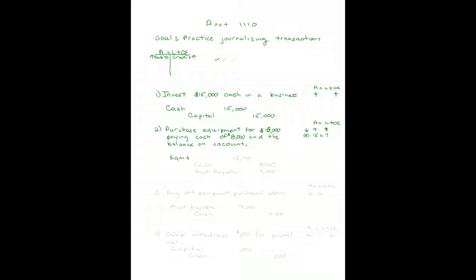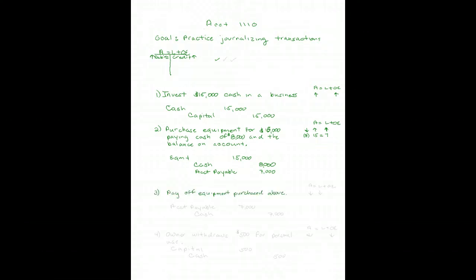Debit Equipment for $15,000. Then credit Cash for $8,000 — cash is an asset and to make it smaller you credit it. Accounts Payable gets bigger by the difference, $7,000 — a credit to Accounts Payable. The journal entry and the balance sheet equation now both work.